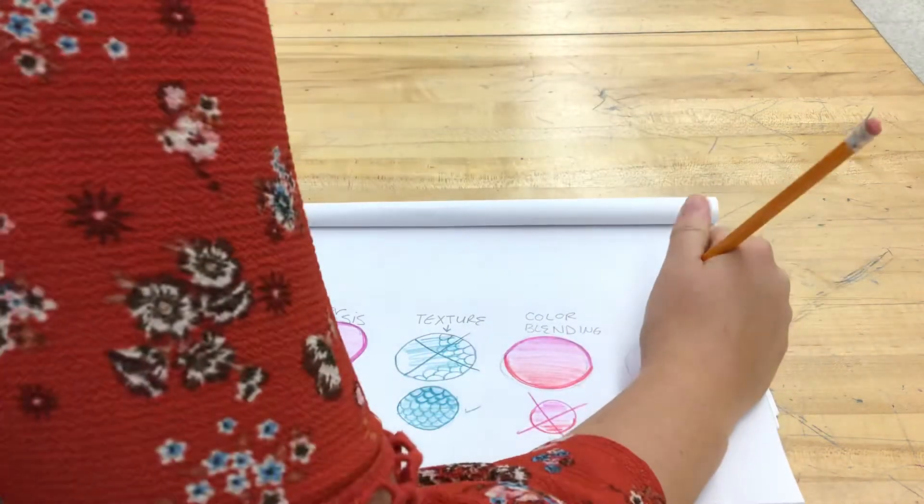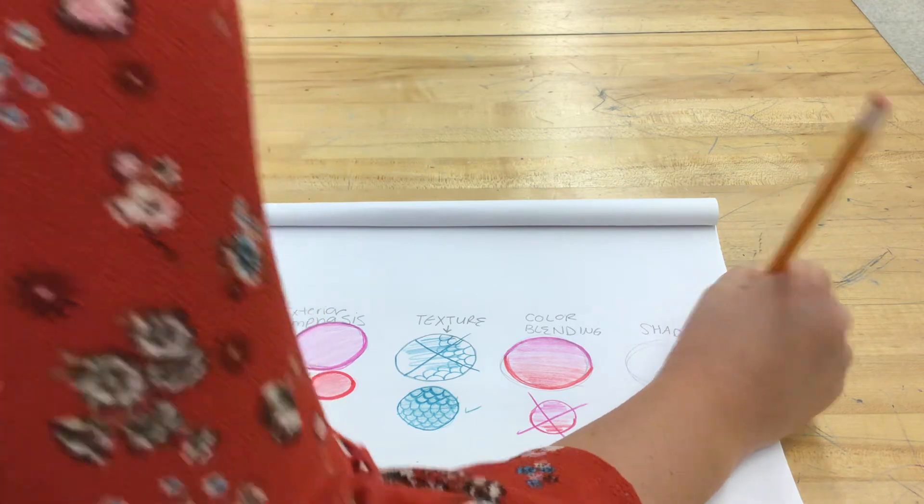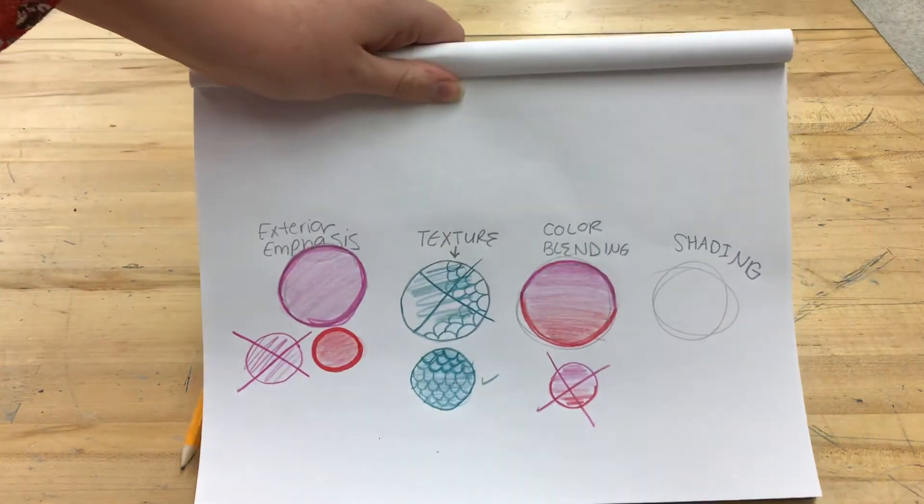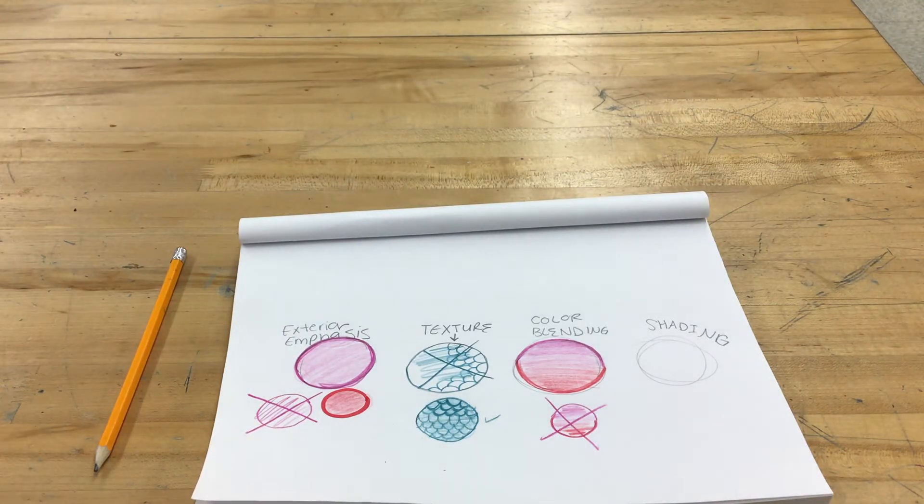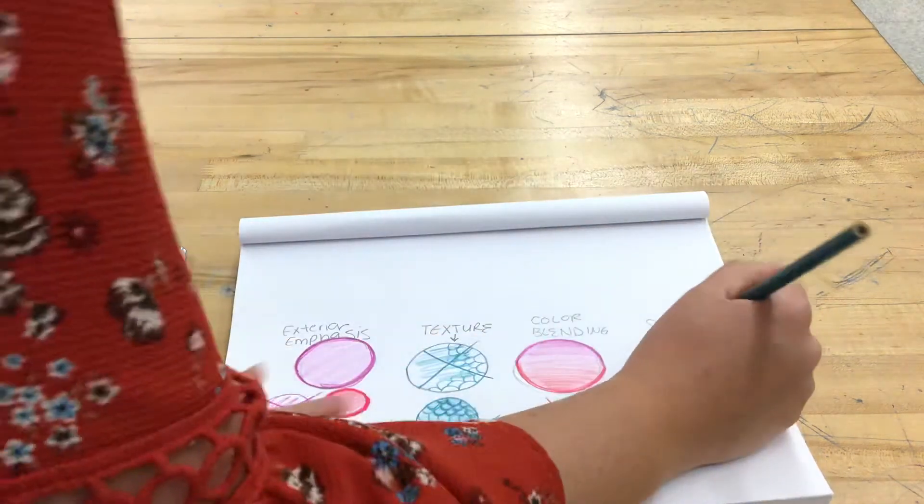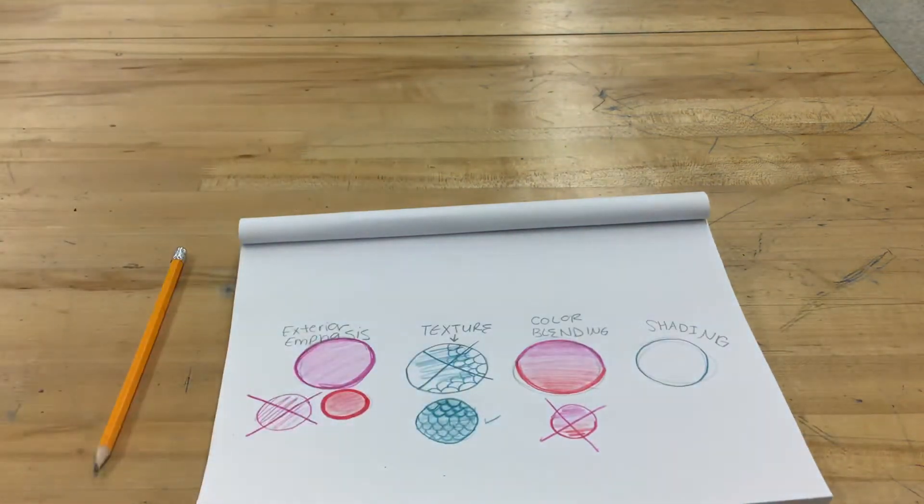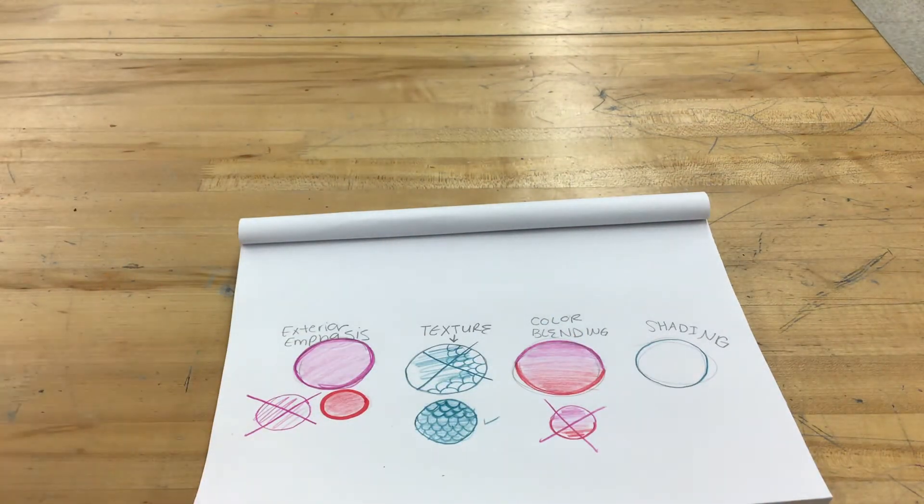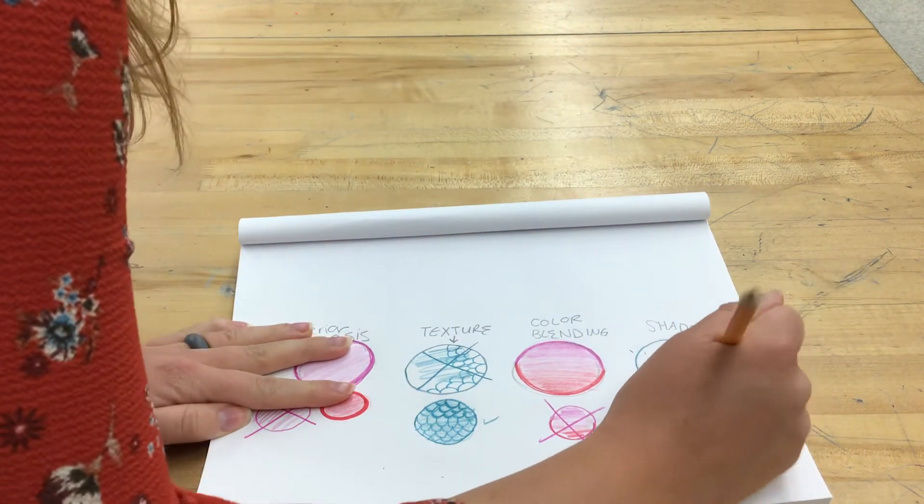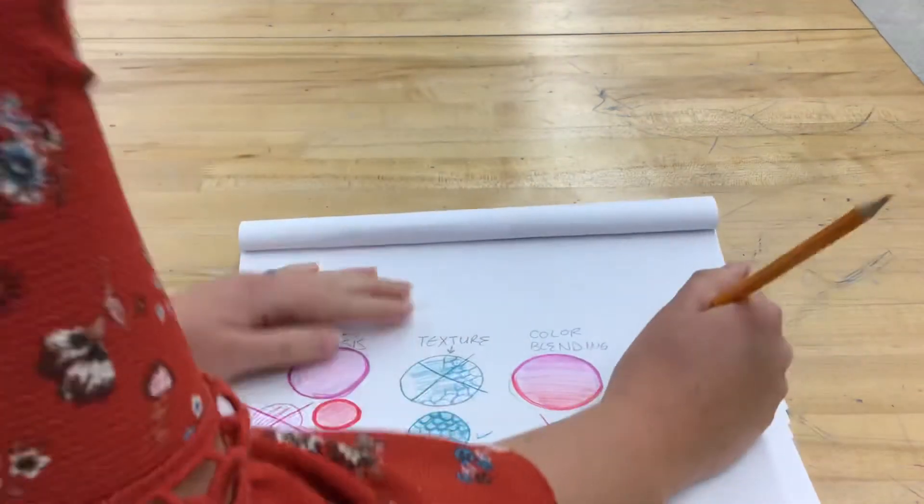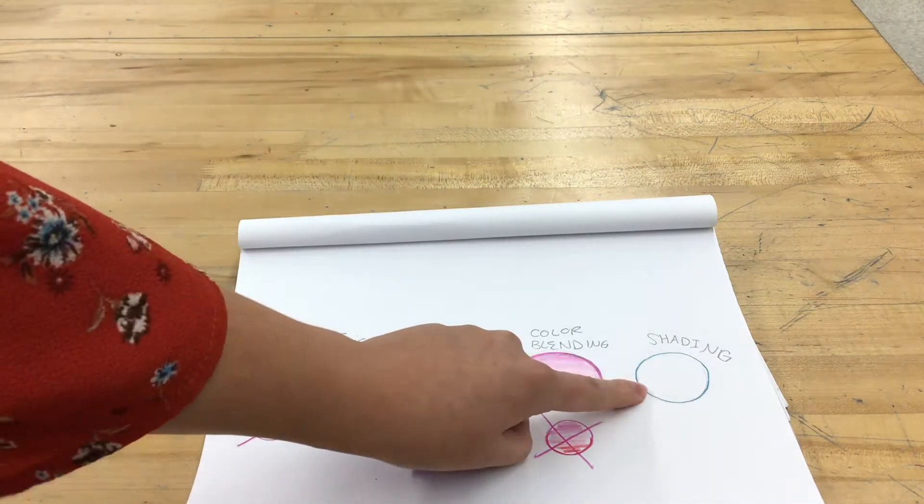The last coloring technique we are going to do is shading. You need to label your last circle shading. For the shading circle, I am going to draw an outline of the circle. And my outline was way off from what I thought it was going to be originally. So, I am going to go in with my eraser and kind of erase that extra regular pencil line. Because I don't want that on my paper. I want to erase all of my pencil lines that are not colored pencil.